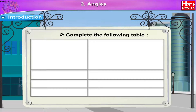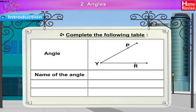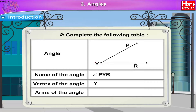Complete the following table. Angle 1: Name of the angle is angle PYR. Vertex of the angle is Y. Arms of the angle are PY and YR.